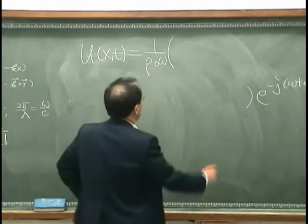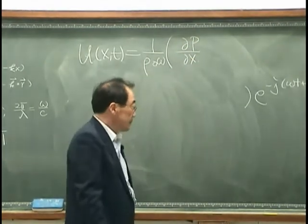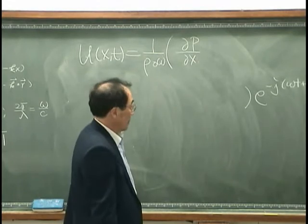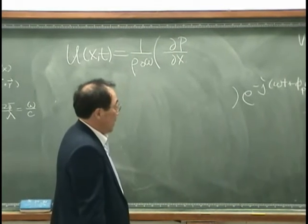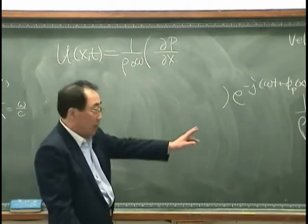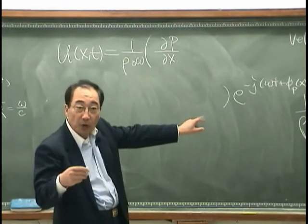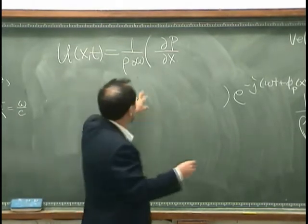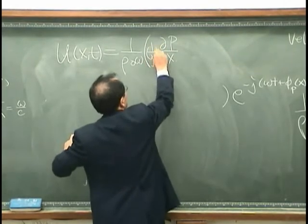Okay, then I have dp/dx, and minus 1 and minus cancel out, I have 1 over j, right? So I have 1 over j, let's put it over here.